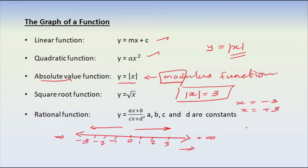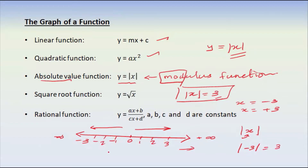So, if you have the first one, the modulus of u is equal to u. If you have the third one, the modulus of u is equal to minus u. So if you have the third one, the modulus of u is equal to minus 3, which means the modulus of u is equal to minus u.